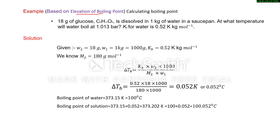Next, this numerical is based on elevation of boiling point. We will calculate the boiling point of a solution. 18 gram of glucose (C6H12O6) is dissolved in 1 kilogram of water in a saucepan. At what temperature will water boil at 1.013 bar? Kb is given. We need to find the boiling temperature of the solution, so first we find the elevation of boiling point. The values given are: w2 (mass of solute), w1 (mass of solvent, given in kilogram, converted to gram), Kb in kelvin·kilogram per mole, and M2 (molar mass of glucose, calculated by adding atomic masses of all atoms) = 180 gram per mole.